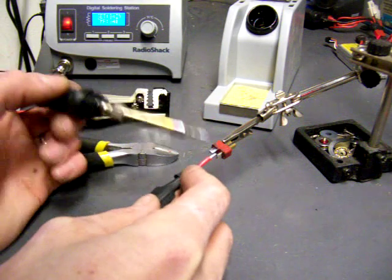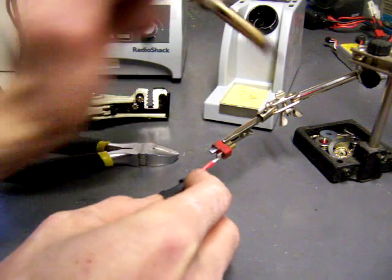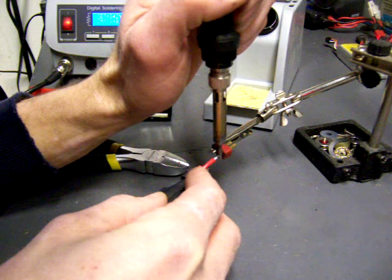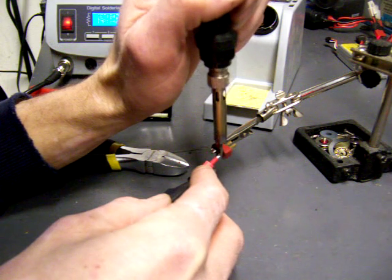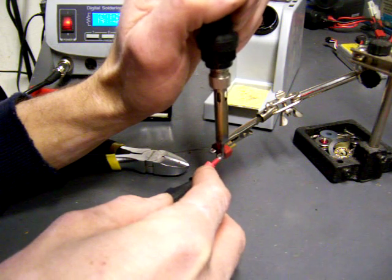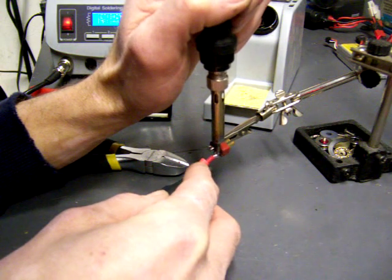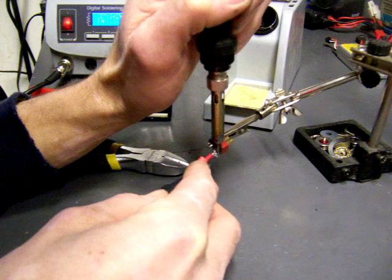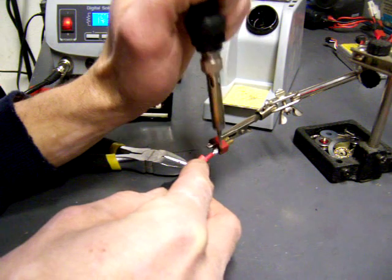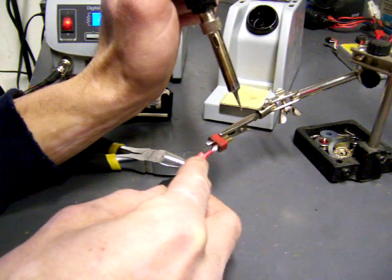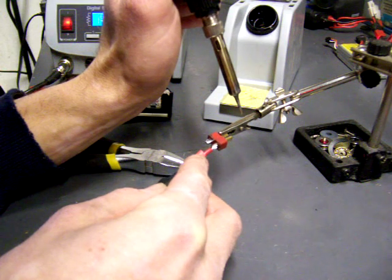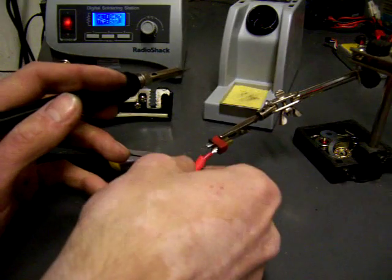All right, so with the Dean's, the positive is always this flat one here, as I stated in Riptide's written tutorial. I'm going to want to melt the solder on the wire first to get it transferring the heat. And then you'll see it once it melts the solder on the prong of the Dean's plug. Hold it there for a second until it sets up and good to go.